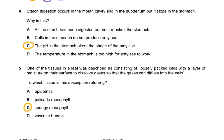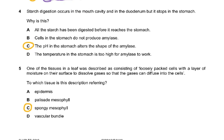Question four: starch digestion occurs in the mouth cavity and in the duodenum, but it stops in the stomach. Why? All the starch has not been digested before reaching the stomach — that's wrong. Cells in the stomach do not produce amylase, but the question asks specifically why digestion stops, not that amylase isn't produced there.